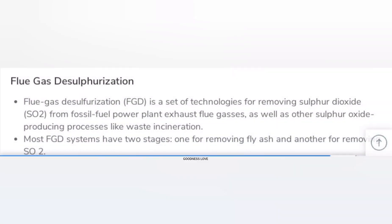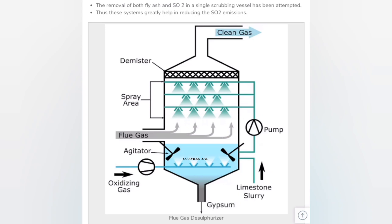Flue gas desulfurization (FGD) is a set of technologies for removing sulfur dioxide (SO2) from fossil fuel power plant exhaust flue gases, as well as other sulfur oxide producing processes like waste incineration. Most FGD systems have two stages, one for removing fly ash and another for removing SO2. The removal of both fly ash and SO2 in a single scrubbing vessel has been attempted. Thus these systems greatly help in reducing SO2 emissions.